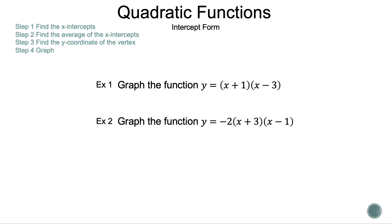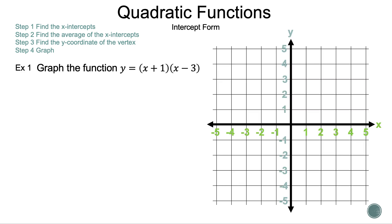Now let's put all this into action by looking at the examples. The steps are: step one, find the x-intercepts; step two, find the average of the x-intercepts; step three, find the y-coordinate of the vertex; step four, graph.